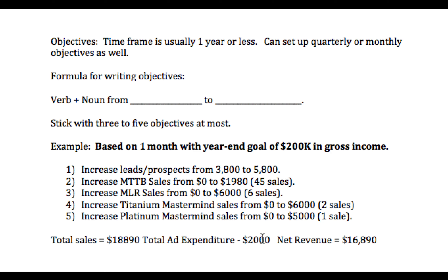My total ad expenditure is going to be around $2,000, so I've got to keep that in the back of my mind when setting my objectives and the numbers I want to hit. My net revenue for the month will be $16,890. If you multiply that by 12, then I'm more than on track for my $200,000 in gross income goal for my internet marketing business.